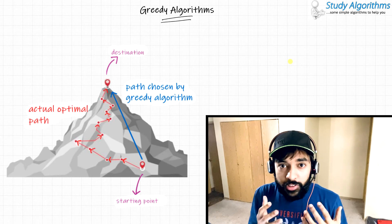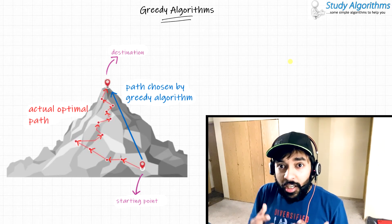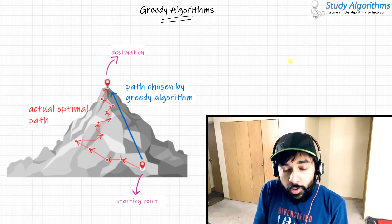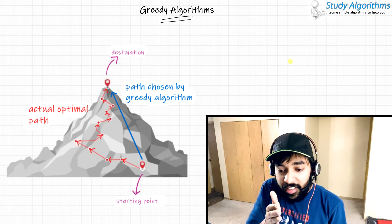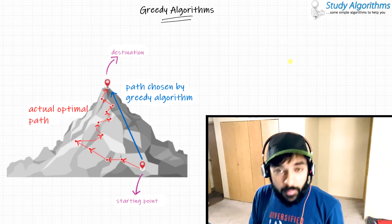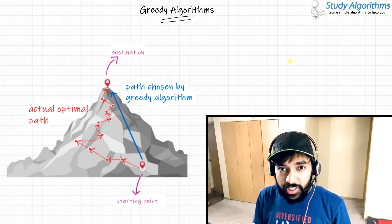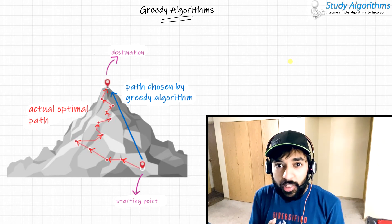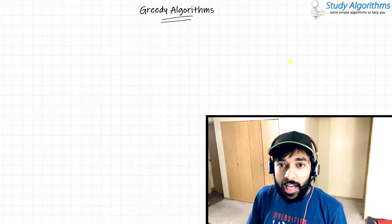A greedy algorithm would always hope that we would reach the optimal solution just by choosing the best optimal path at every instance. Before it gets further confusing, let me just show you a quick example of how a greedy algorithm actually works.